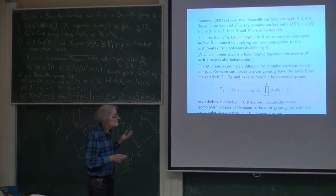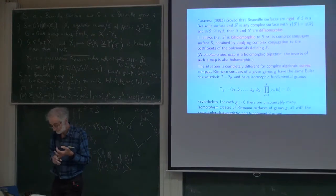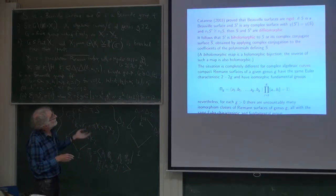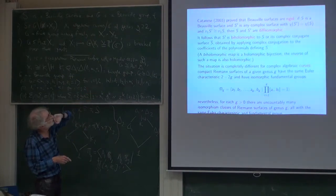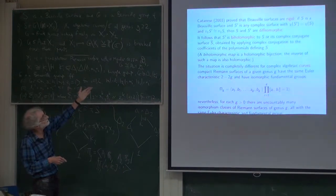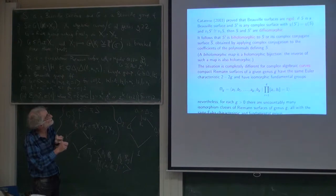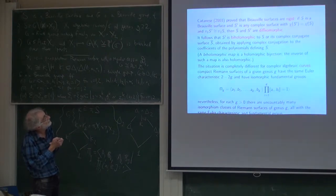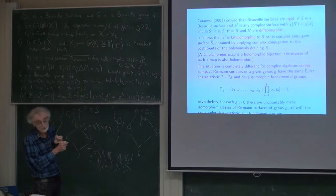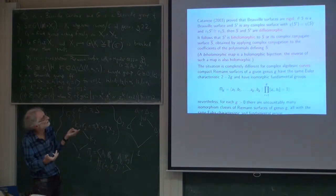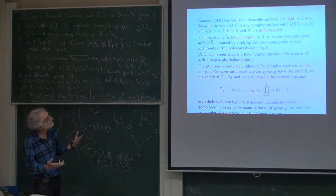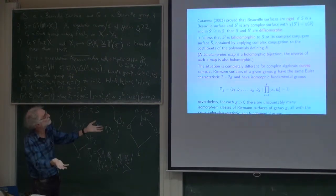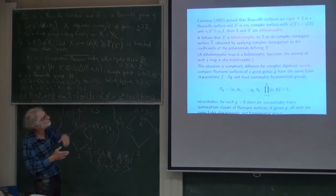These are the two basic pieces of information about a Beauville surface: the Euler characteristic and the fundamental group. Catanese, in one of the earliest papers on Beauville surfaces, proved a rigidity result. It tells you that this information almost completely determines the Beauville surface among complex surfaces. If you have another complex surface with the same Euler characteristic and an isomorphic fundamental group, then it's diffeomorphic to the Beauville surface you started with.